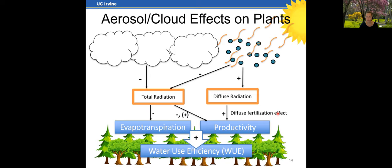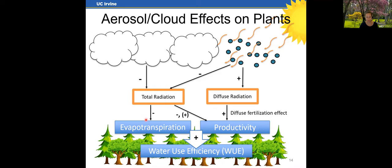To summarize, the main effects of aerosols and clouds on plants operate through their influence on diffuse and total radiation. Atmospheric particles increase the proportion of diffuse radiation, leading to increases in plant productivity through the diffuse fertilization effect. However, at very high aerosol mass loadings or under cloudy conditions, the negative impact on total radiation can reduce productivity — though for sun leaves already saturated with light or above their optimum temperature, a reduction in total radiation can actually increase productivity. In general, decreases in total radiation decrease evapotranspiration, and when this coincides with increased productivity, water use efficiency increases.